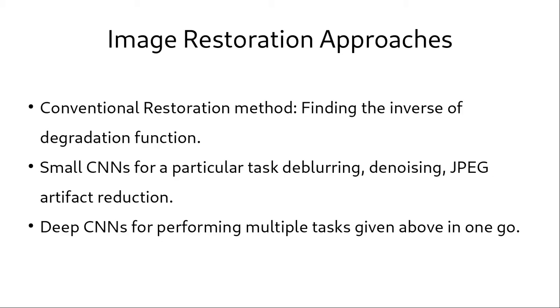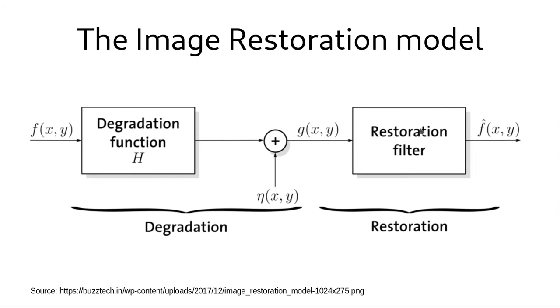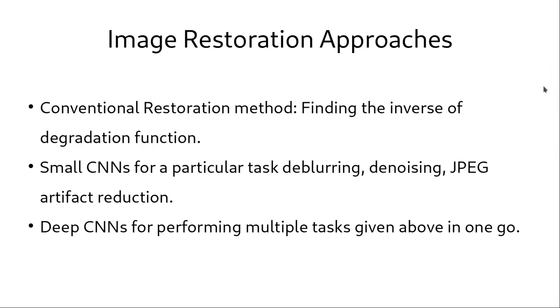There are a variety of approaches for image restoration. The conventional restoration method is to find the inverse function of the degradation function as we have seen previously. We find the restoration filter's transfer function in order to restore the image. To use the conventional restoration methods however, we are required to find the degradation function which can be computationally intensive. An alternative approach is a deep learning method where we use convolutional neural networks to perform image restoration. We can use small CNNs for performing particular tasks or we can also use deep CNNs for performing multiple tasks in one go.